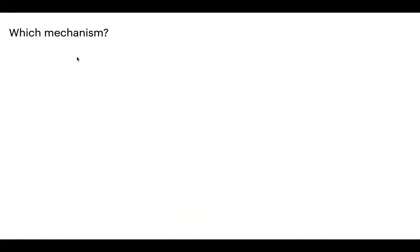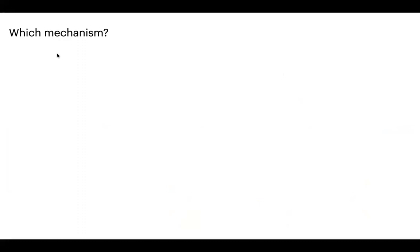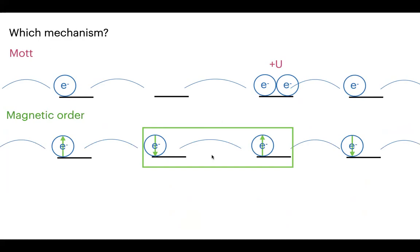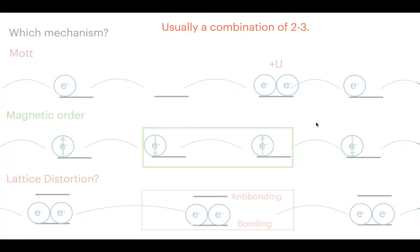Key questions include: which mechanism makes something a Mott insulator — is it Mott behavior, or magnetism opening a gap, or a lattice distortion? For any given material this is hard to tell, and in superconductors you have a variety of competing phases that are difficult to disentangle. This is one of the central challenges in these materials.